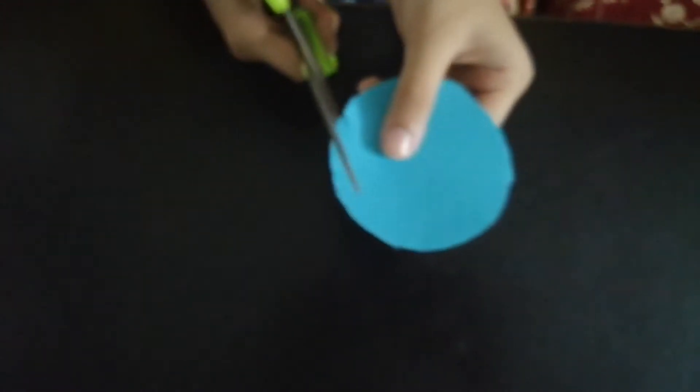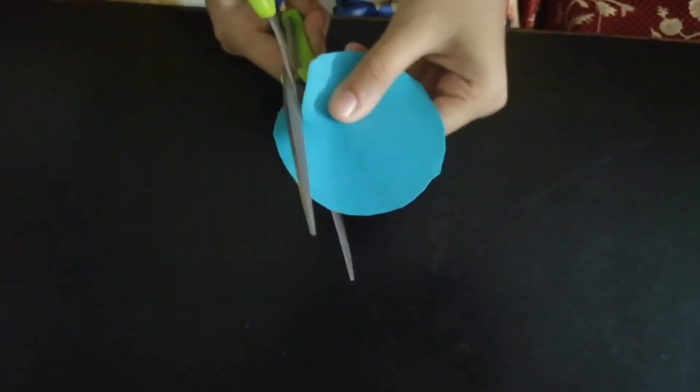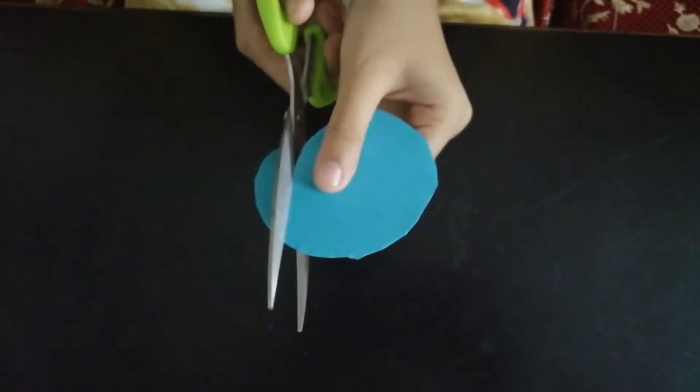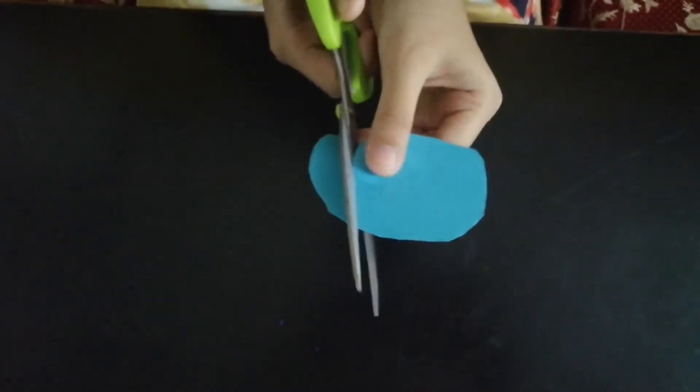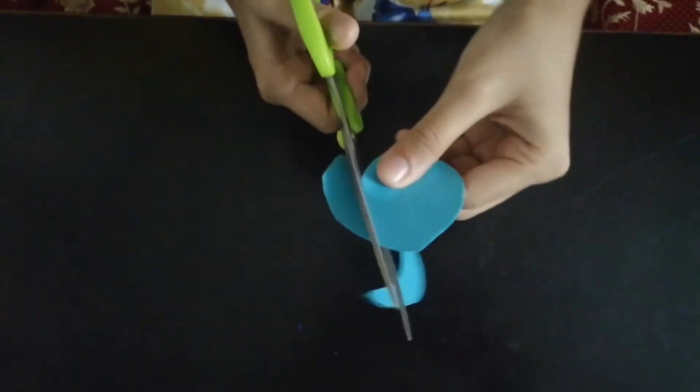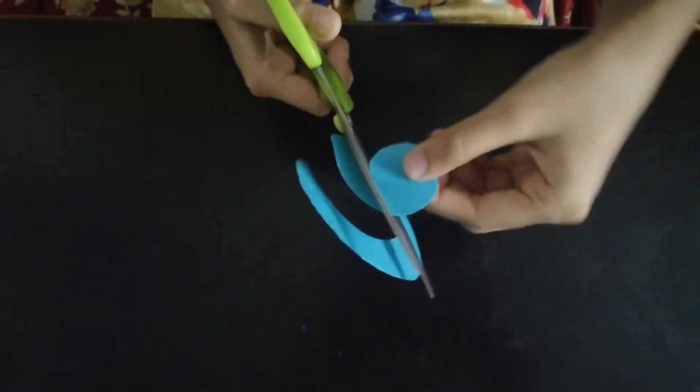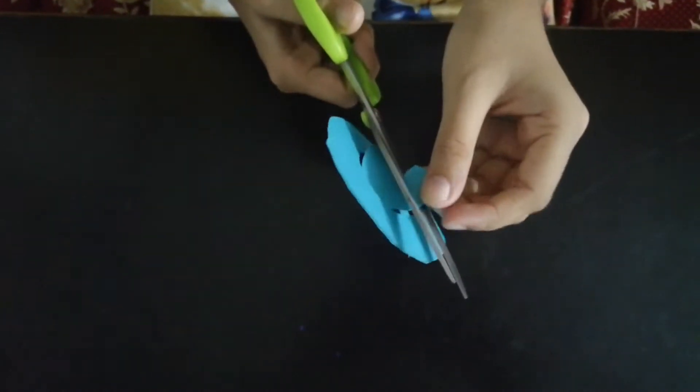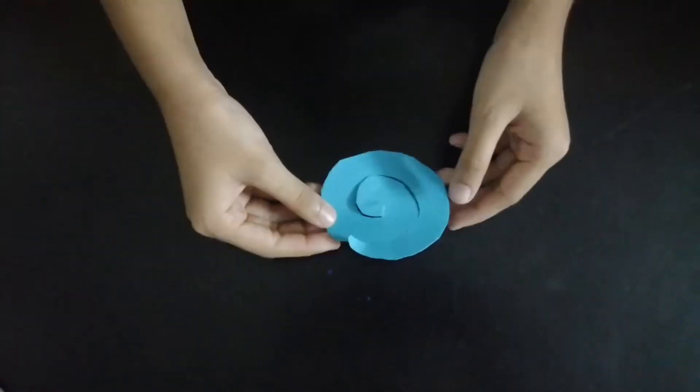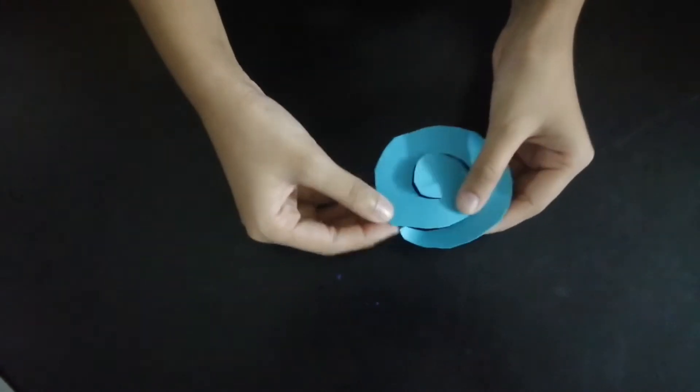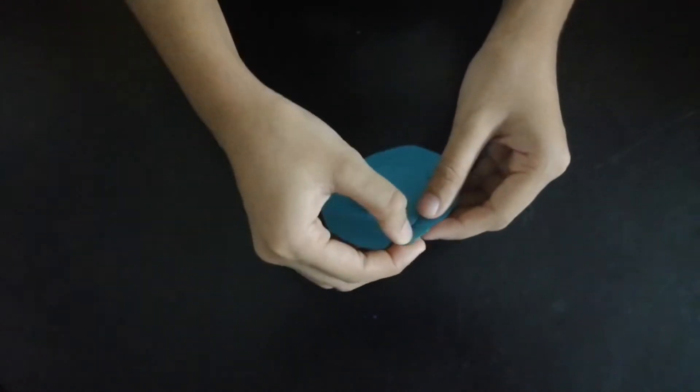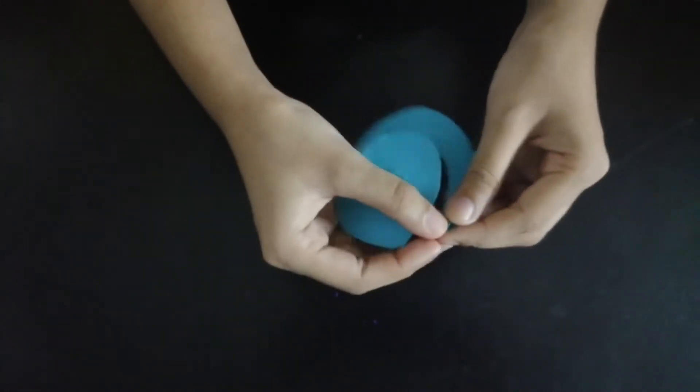Take one circle and cut it like this. Then we get this shape. Next step, we have to roll it like this.